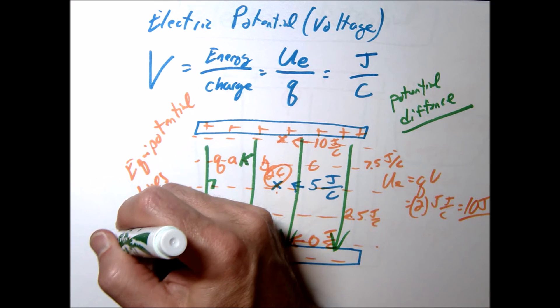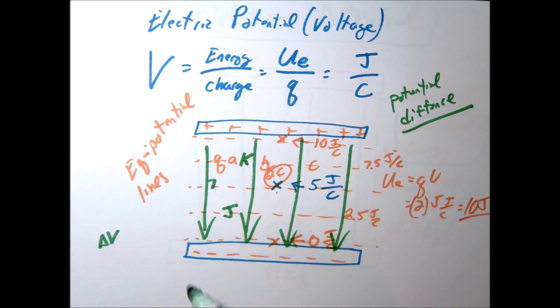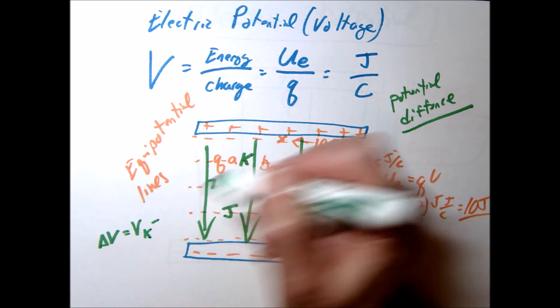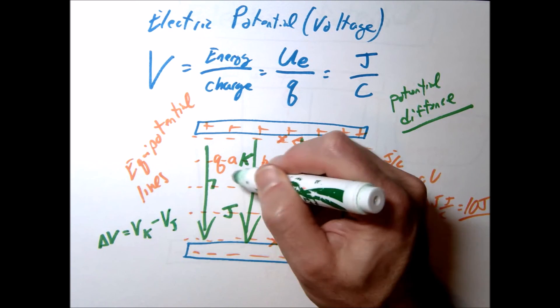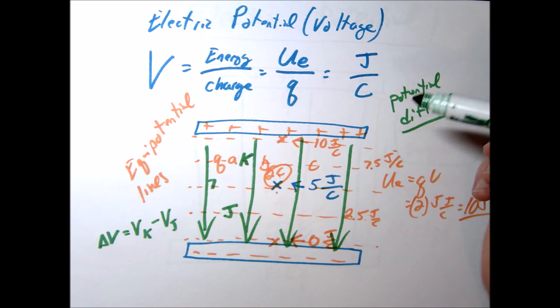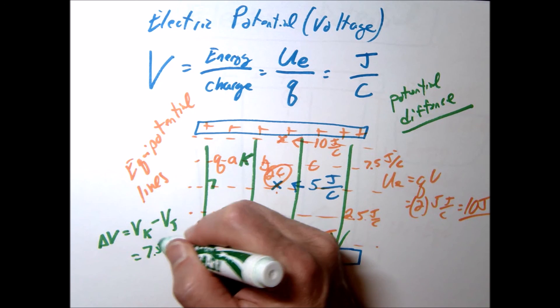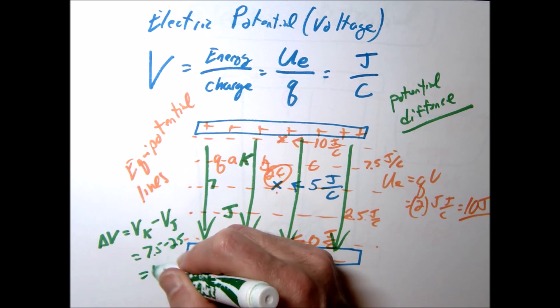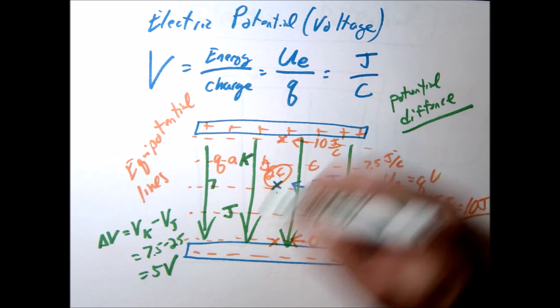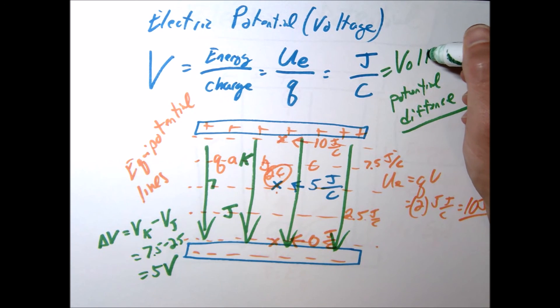And so if we go to K, if we go from J to K, we want to know the potential between that, that would just be 5 volts or 7.5 minus 2.5. So we'd say the potential difference there is 5 volts or 5 joules per coulomb. Sorry, I don't remember if I defined this earlier, but a joule per coulomb will oftentimes just call a volt.